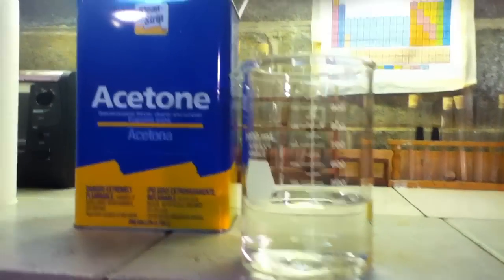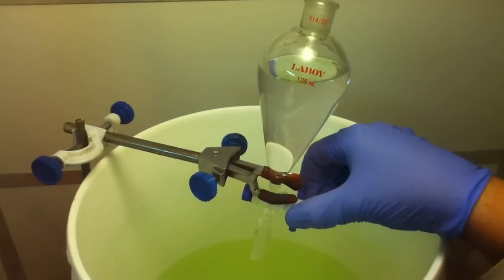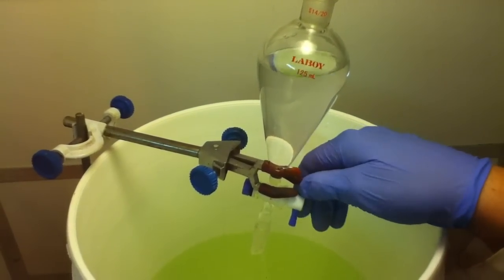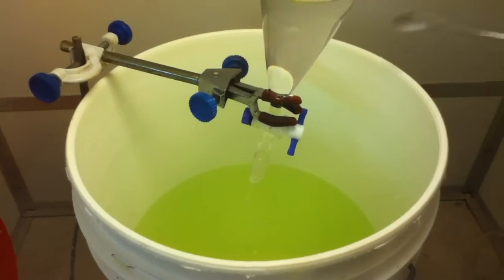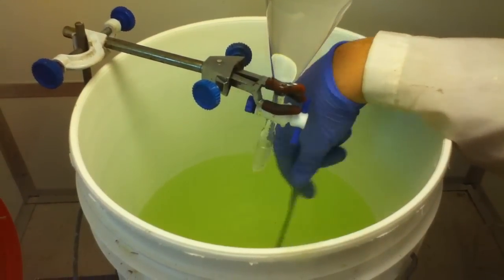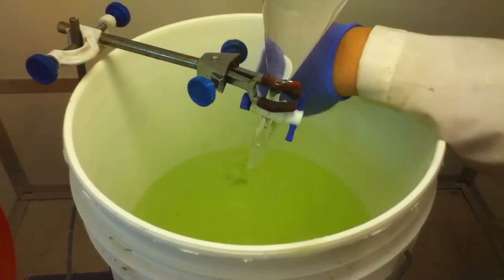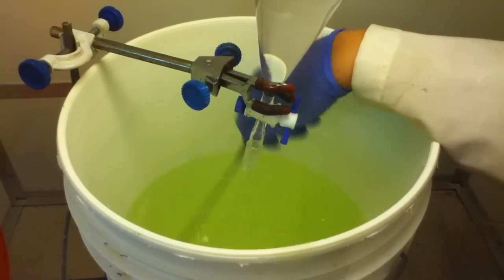Measure out approximately 400 milliliters of acetone. Add the acetone to a separatory funnel. Position the funnel above the bucket and adjust the stopcock to allow a slow stream of acetone to flow from the funnel.